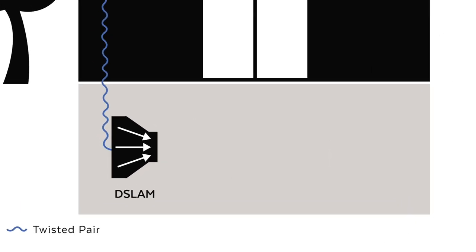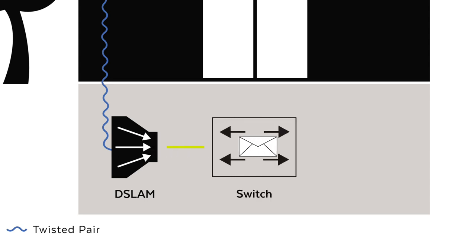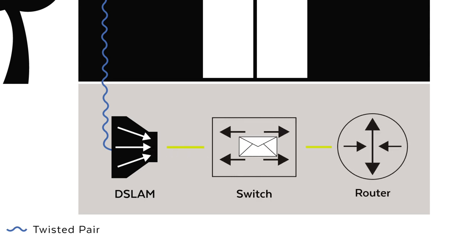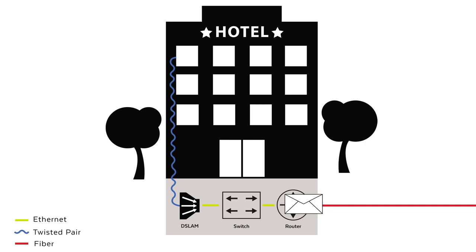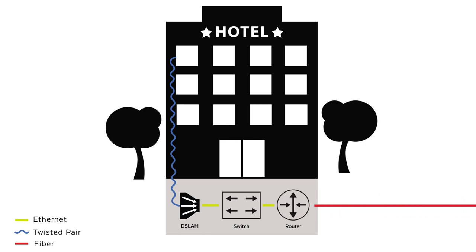The DSLAM can then connect to a switch depending on the network design. To reach a wide area network, the switch will then forward data to a router. The router will route data to the Internet Service Provider through a broadband connection such as Ethernet or Fiber.